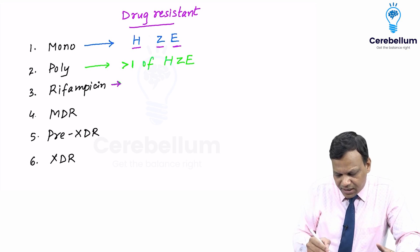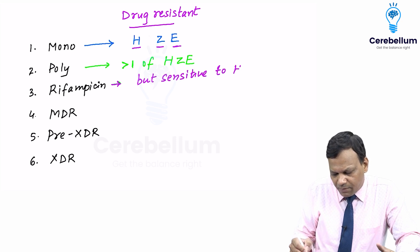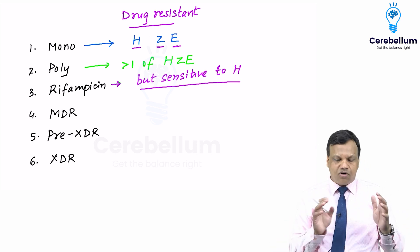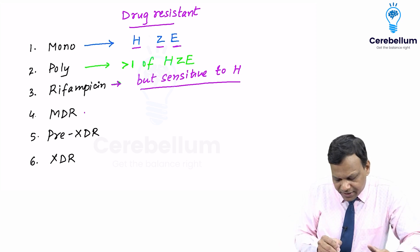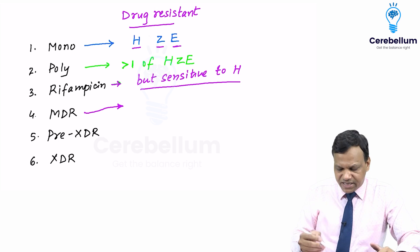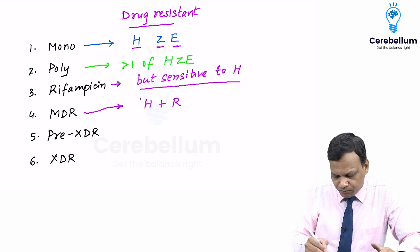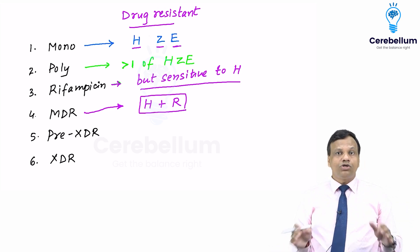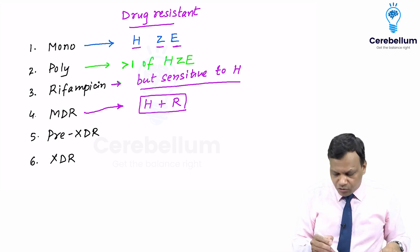Rifampicin resistant TB: when the mycobacterium is resistant to rifampicin but sensitive to isoniazid. MDR-TB (Multi Drug Resistant TB): this is important — MDR-TB is when the mycobacterium is resistant to both isoniazid and rifampicin.